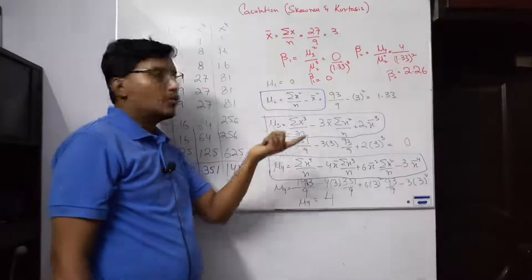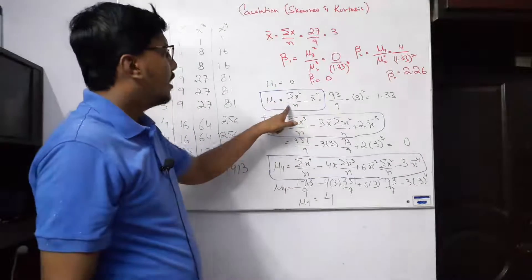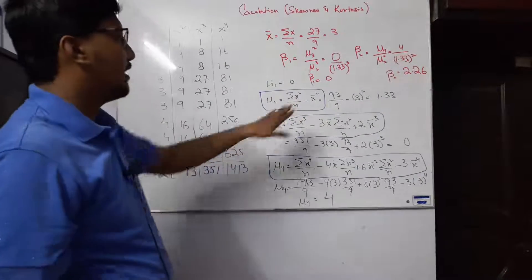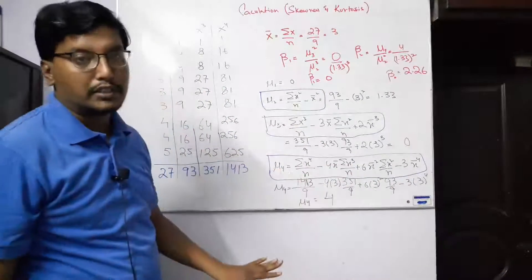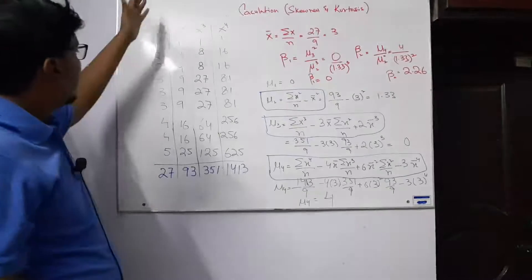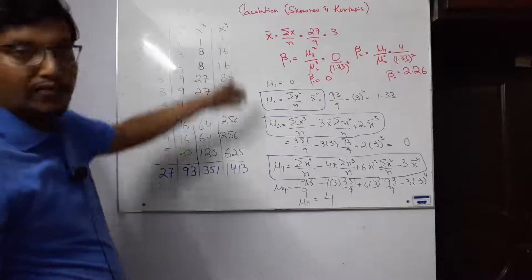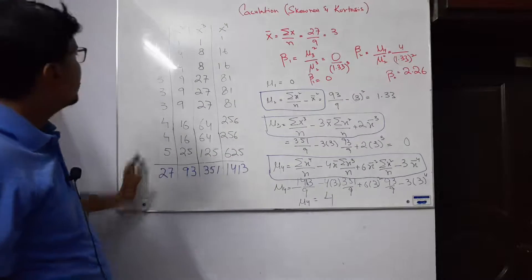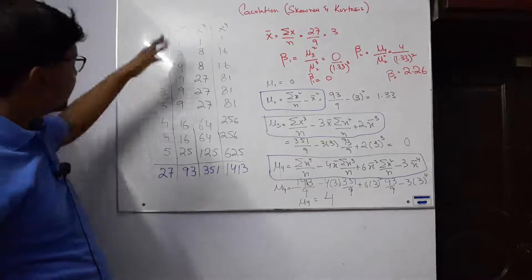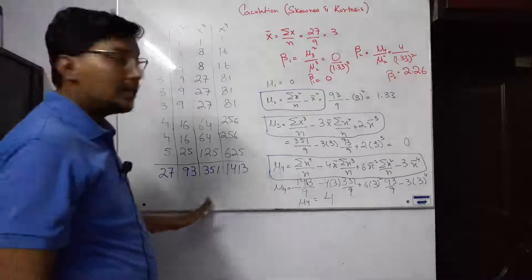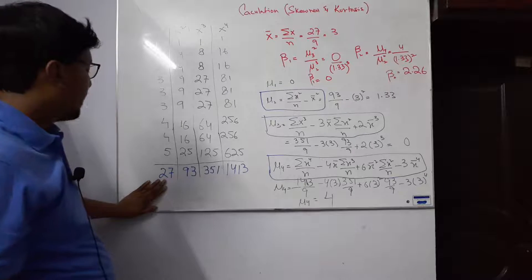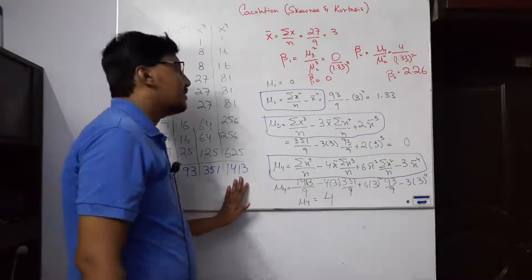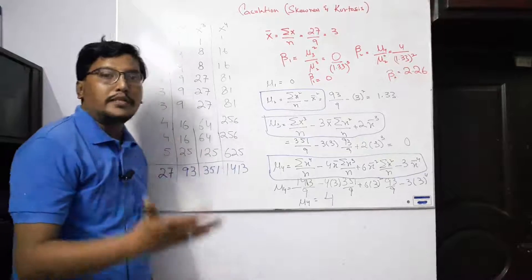This formula only requires you to know n and the summation of x², x³, and x⁴. So we have our data x, the square of the data, the cube of the data, and the fourth power of the data. The sum of x is 27, the sum of x² is 93, the sum of x³ is 351, and the sum of x⁴ is 1413.